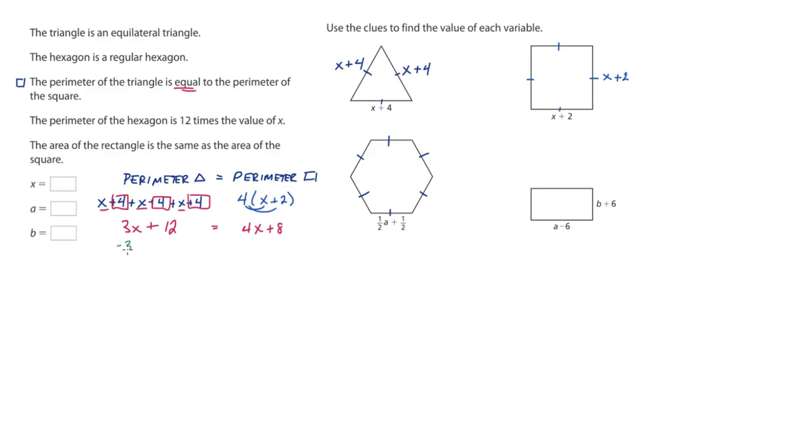So when having a variable on both sides, it's smart to get rid of the variable first. So now we have 12 equals 4x minus 3x is x plus 8. And then we'll subtract 8 from both sides. And we found that x equals 4. Our first clue.